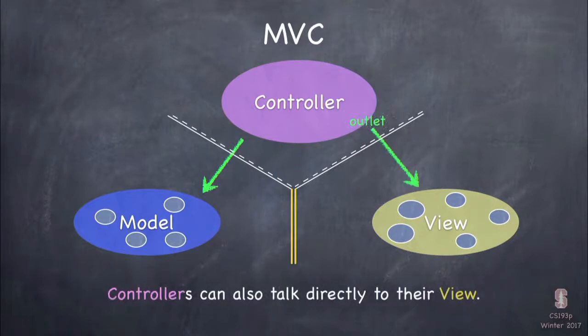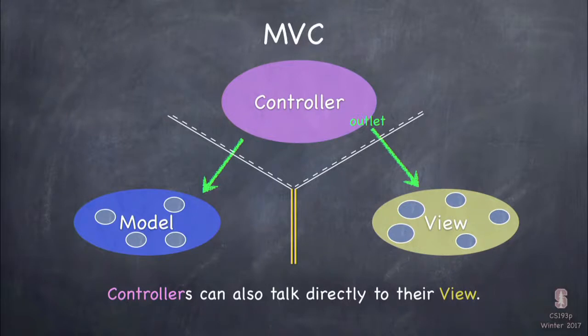Similarly, there's no restriction on the controller talking to the view, because the view are the controller's minions — you have to be able to tell your minions what to do. These connections between a controller and a view are called outlets. You've already seen one in the calculator: the "display" var, which is an instance variable in our controller class ViewController. That display var was an outlet, wired up to a UILabel in our view.